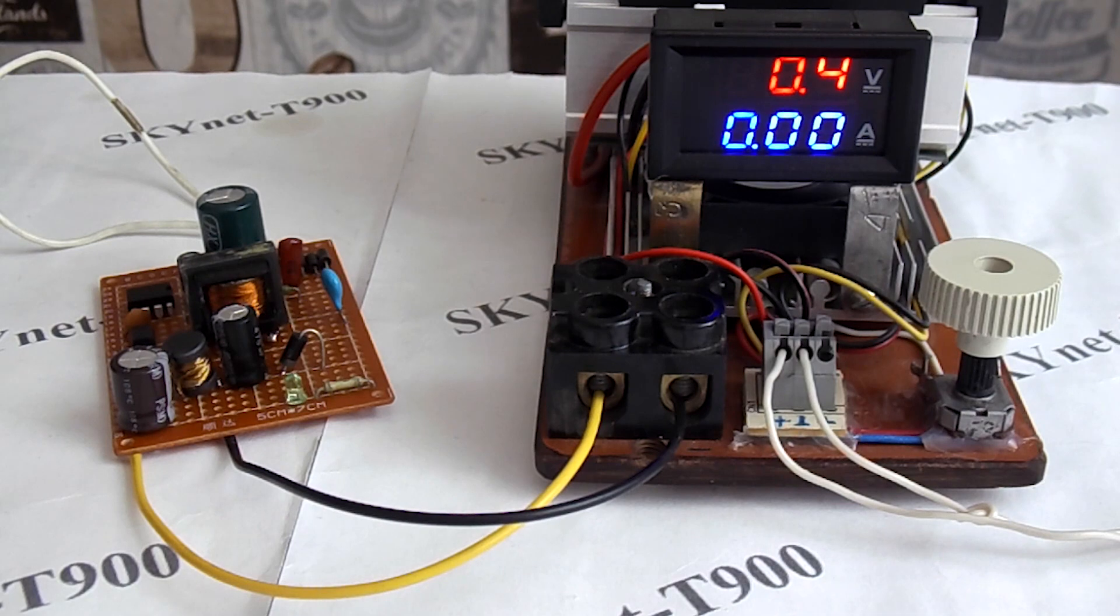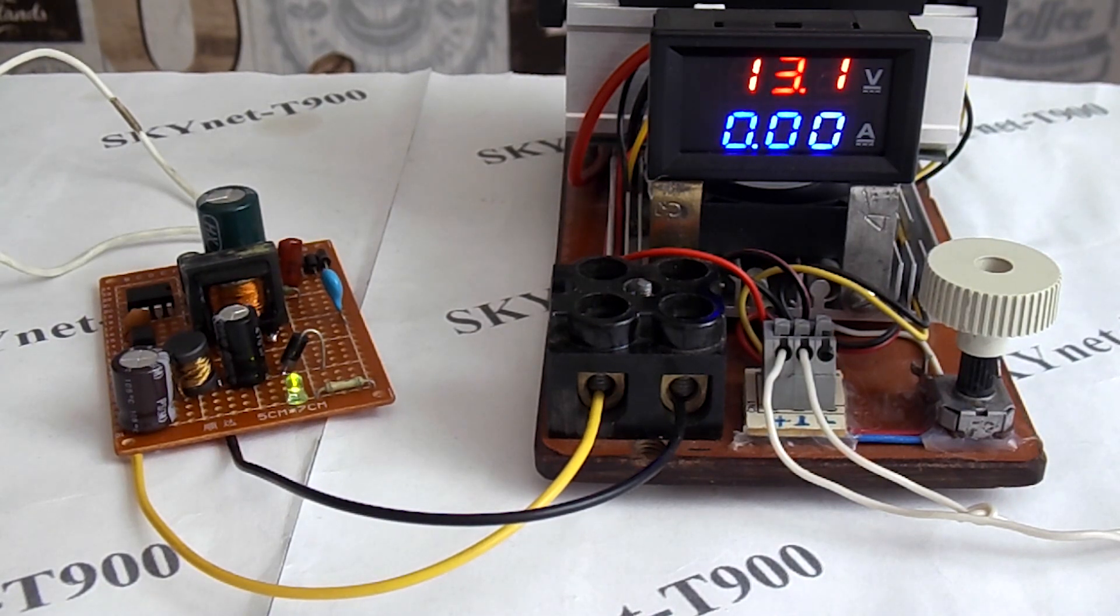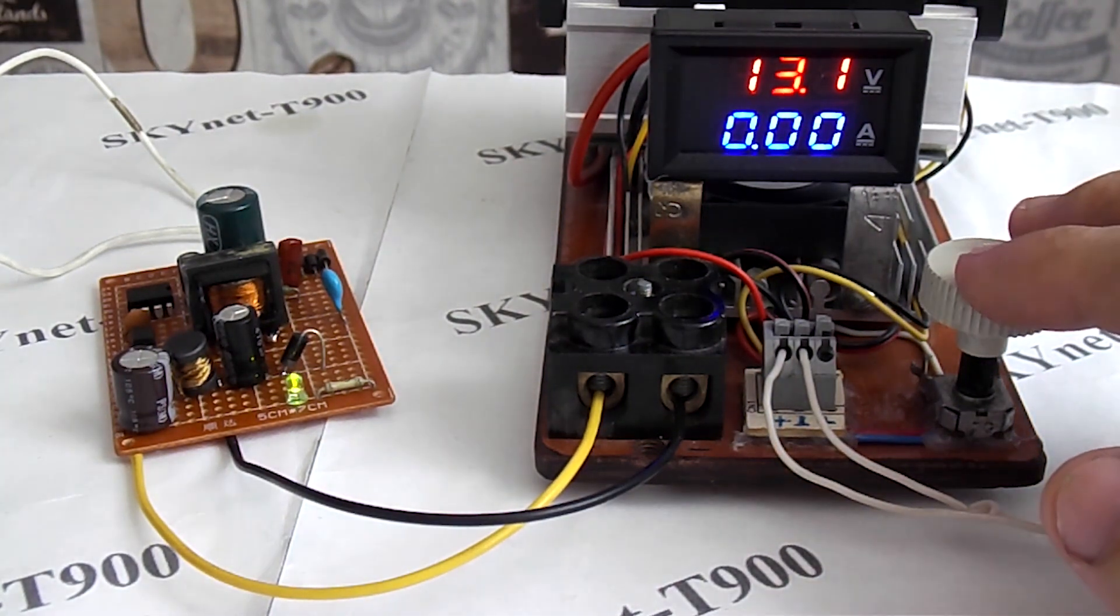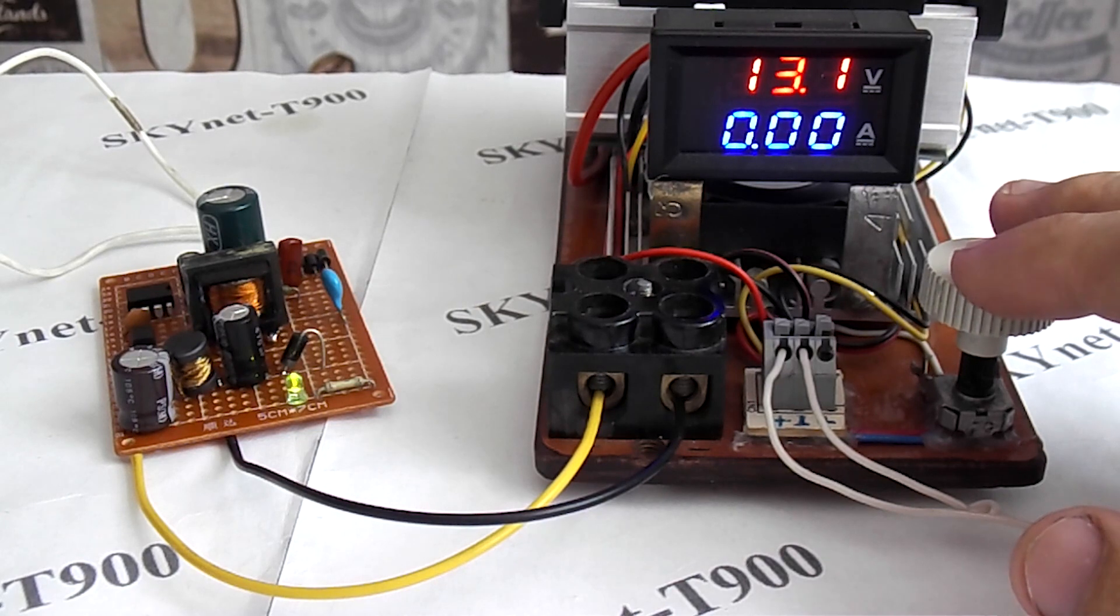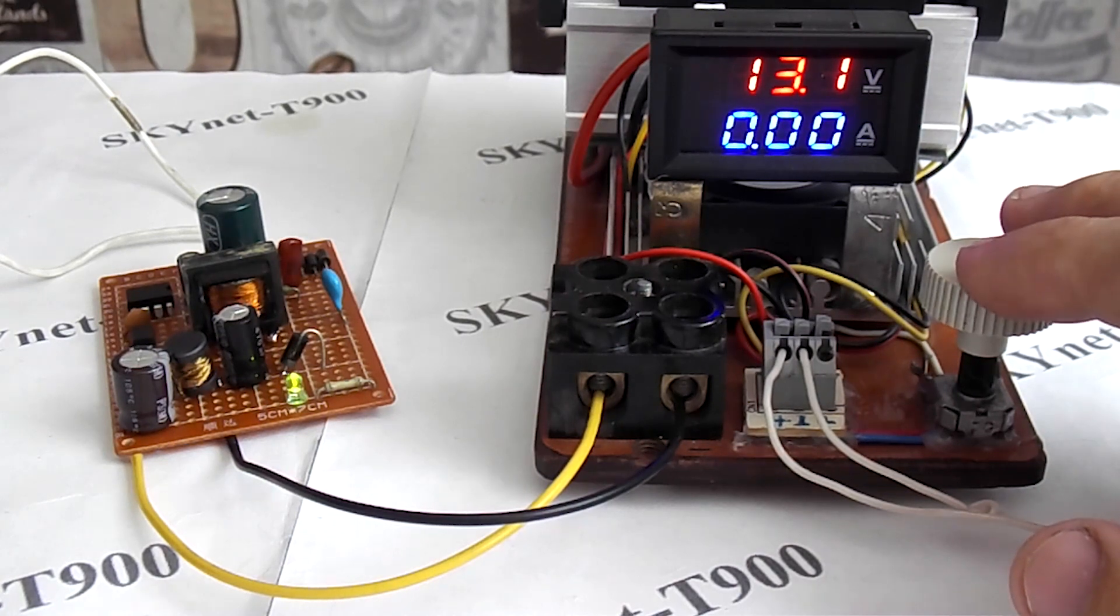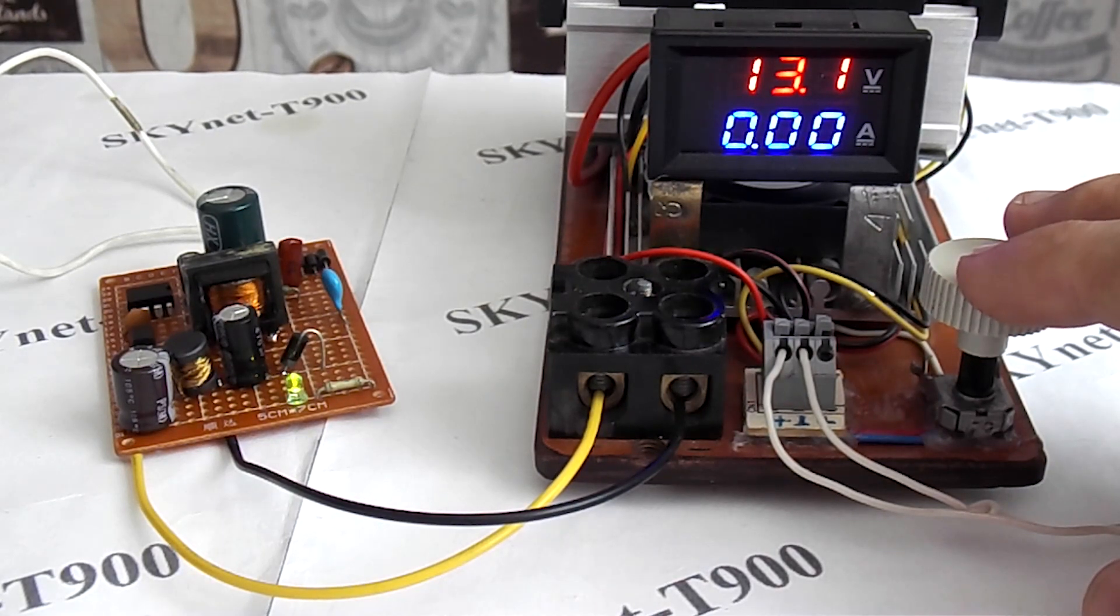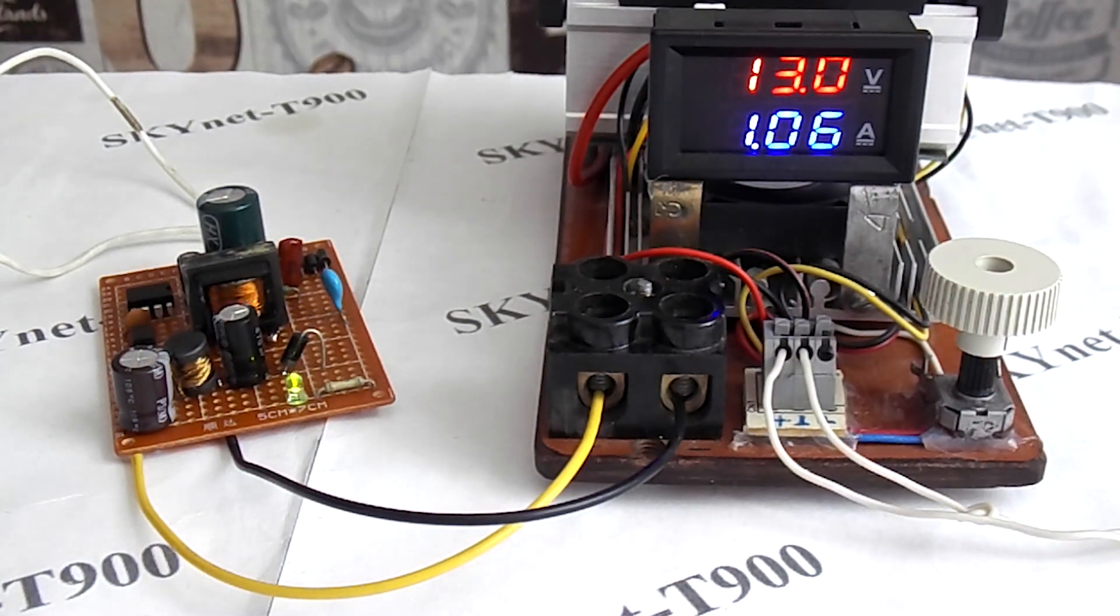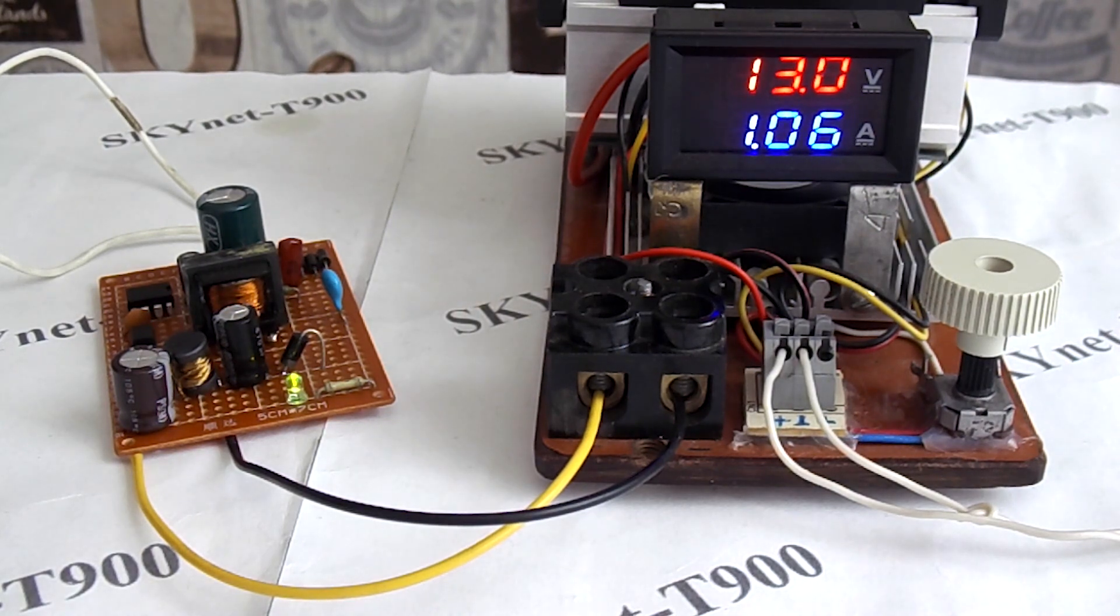Now as usual at the end of the assembly, I will test the power supply. I will not hang bulbs on the power supply, but I will connect the electronic load that I made in one of the previous videos. If anyone is interested, the link to it will be in the description. I slowly rotate the regulator raising the load current. The voltage dropped by 0.1V. 13V 1A is stable.